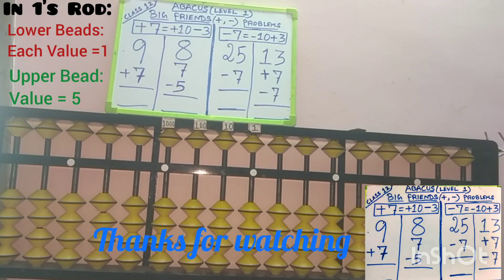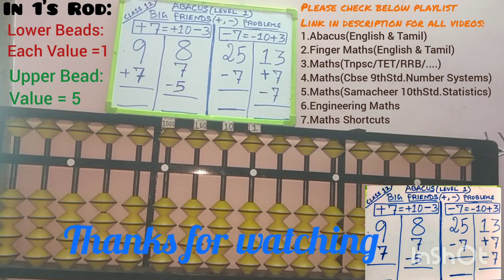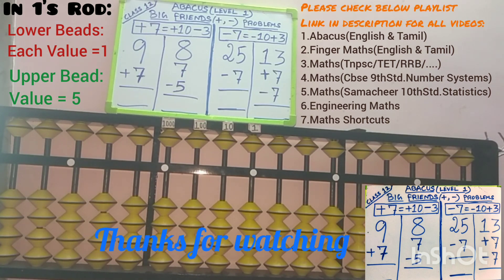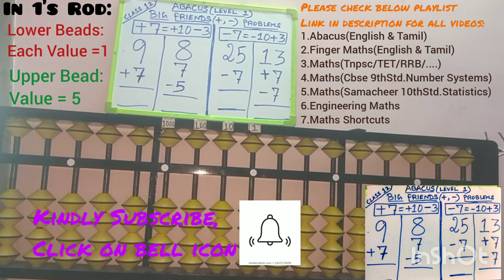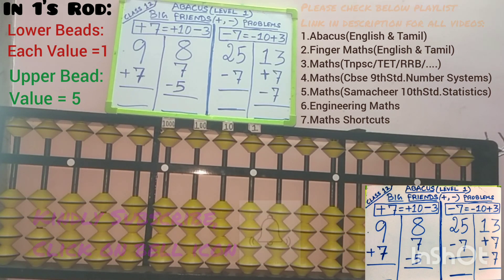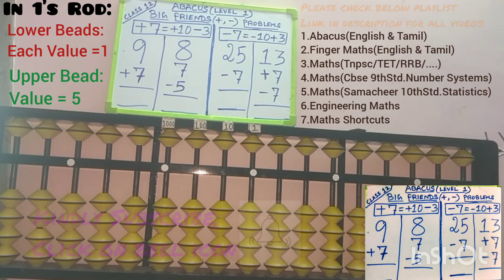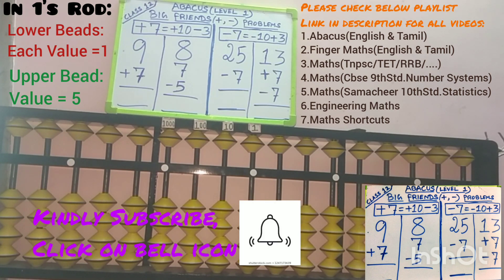Hello friends, we are in level 1 class 12 in Abacus. In this session, I am going to explain addition and subtraction problems in the big friend concept using the formula plus 7 and minus 7.